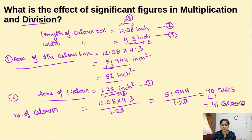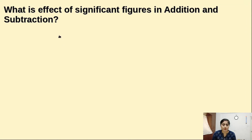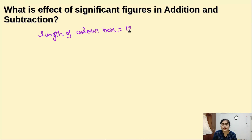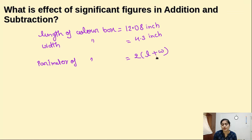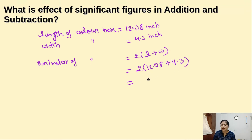Now we will look at addition and subtraction. Taking the same color box example: the length is 12.08 inches and the width is 4.3 inches. Suppose we are calculating the perimeter of the color box. Perimeter = 2 × (length + width) = 2 × (12.08 + 4.3), which gives 32.76 inches.